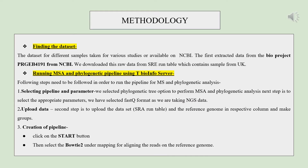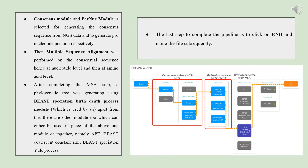The methodology for surveillance of SARS-CoV-2 variants of concern from wastewater samples based on NGS data involves: first, finding the dataset available on NCBI; second, running MSA and phylogenetic pipeline using the tBioInfo server, which involves selecting a pipeline and parameters — for NGS data, FASTQ format is taken, the dataset is uploaded with a reference genome, and the pipeline is created. Once the pipeline is started, BOWTIE2 is selected for aligning reads to the reference genome. A consensus module and per-nucleotide module are selected to generate per-nucleotide position data, then MSA is performed at the nucleotide level and then at the amino acid level. After that, a phylogenetic tree is generated using beast mode, and then the end button is clicked to complete the pipeline.